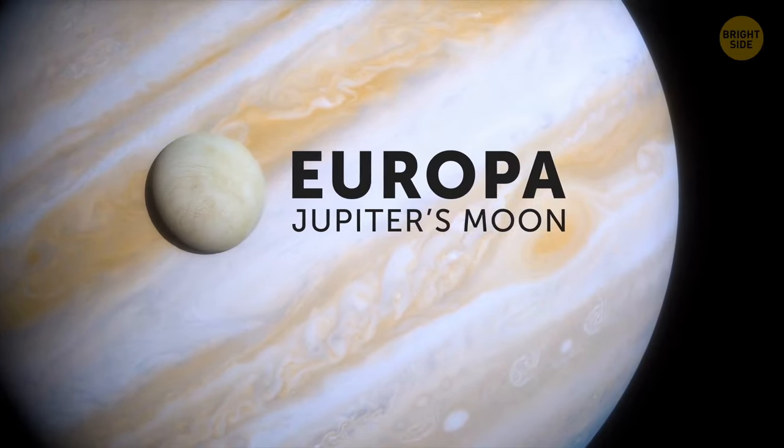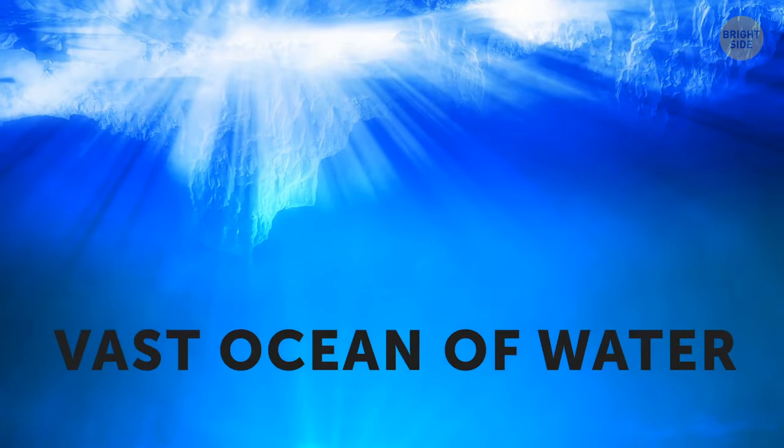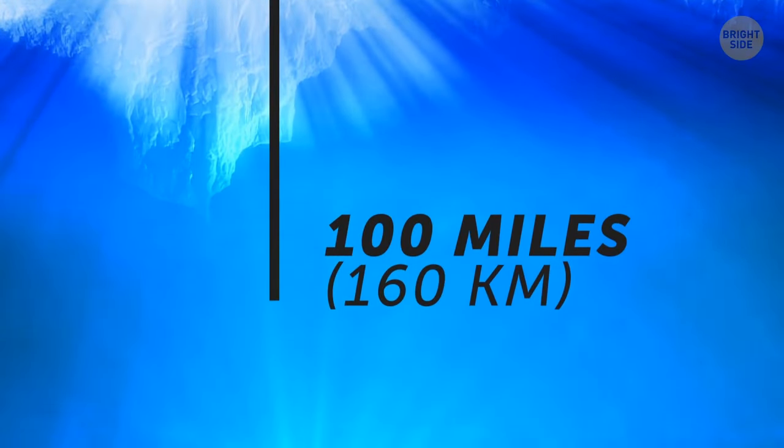Jupiter's Moon, Europa, is covered in a thick layer of ice, but underneath it is a vast ocean of water, measuring up to 100 miles deep.